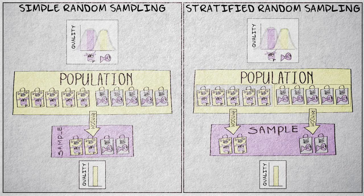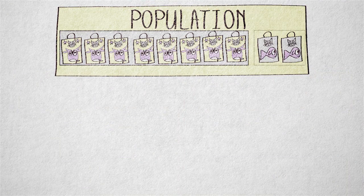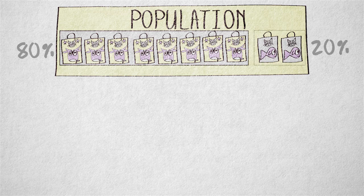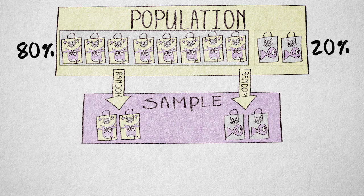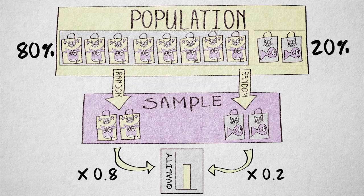It is important to realize that stratified sampling requires that we know which stratum each element belongs to. If we can identify strata, then we also know their size. As a consequence, the size of our subsamples does not have to correspond to the size of the strata.